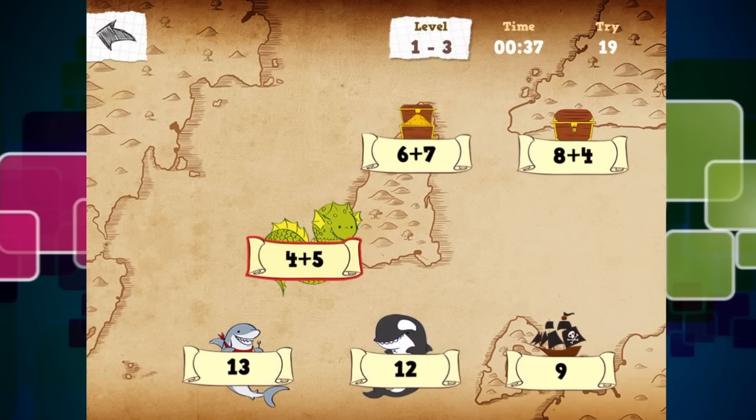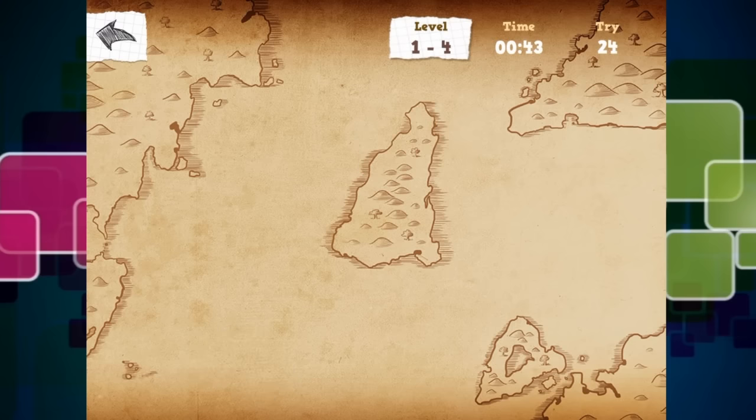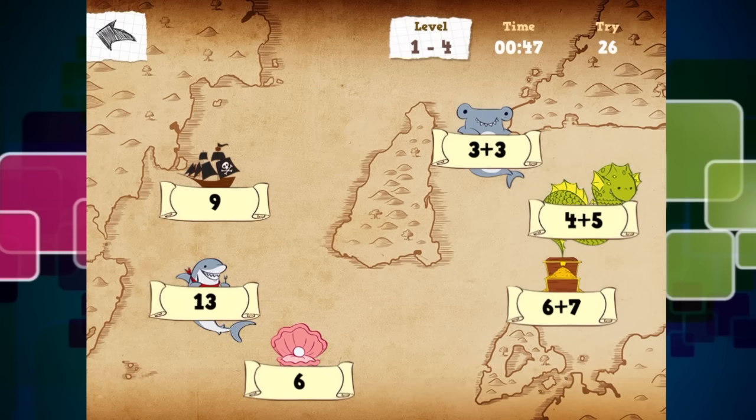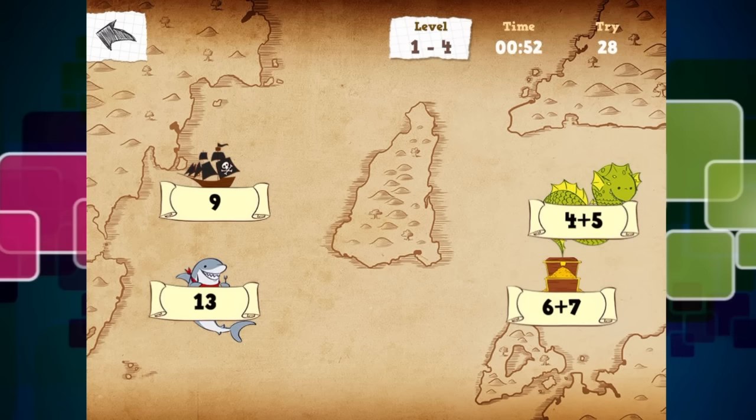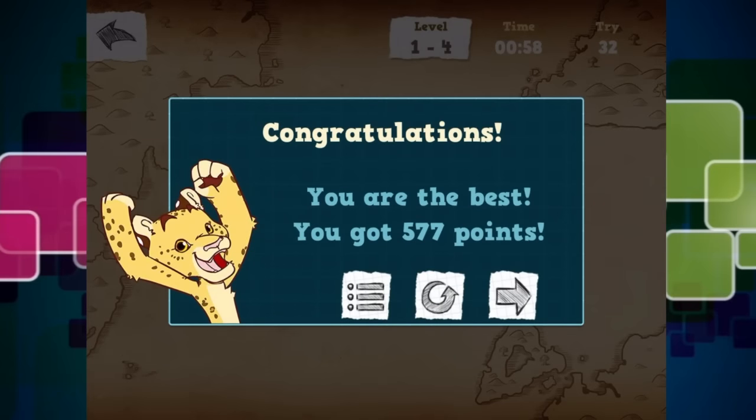Five plus three is eight. Four plus five is nine. Six plus seven is thirteen. One plus one is two. Six. Three plus three is six. Four plus five is nine. Six plus seven is thirteen.